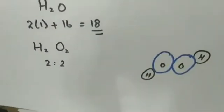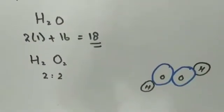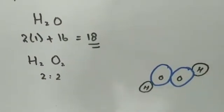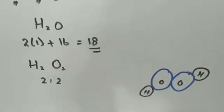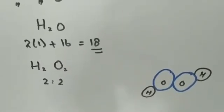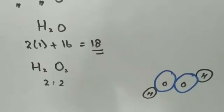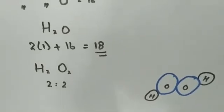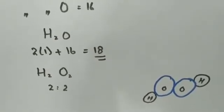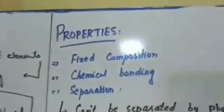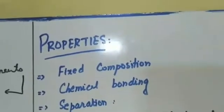If we disturb this ratio — for example, taking two hydrogens with two oxygens — the ratio is disturbed. Two oxygens combining with two hydrogen atoms is no longer water; it will have completely different properties. It is a compound, but not water — it is called hydrogen peroxide.